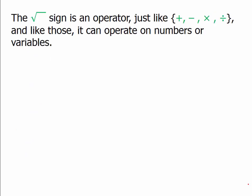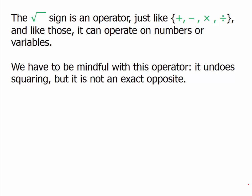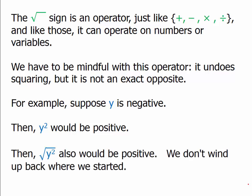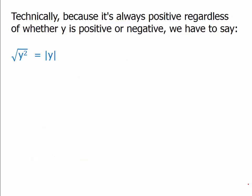The principal square root sign is an operator, just like addition, subtraction, multiplication, and division. Like those, it can operate on numbers or variables. We have to be mindful with this operator — it undoes squaring, but it is not an exact opposite. For example, suppose y is negative. Then y squared would be positive, and the square root of y squared would also be positive. We start with a negative, but if we square and then square root, we don't end with a negative — we end with a positive. Technically, the square root of y squared equals the absolute value of y.